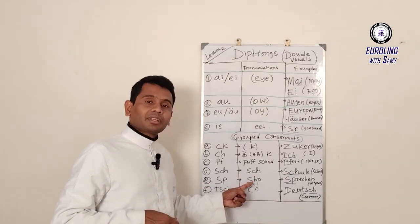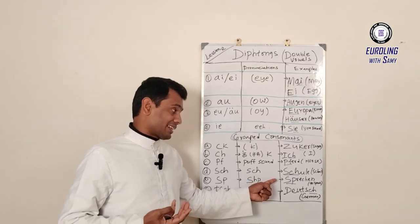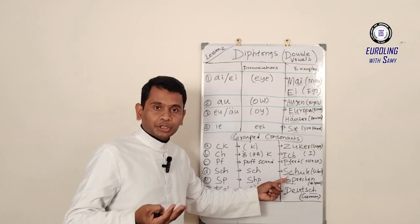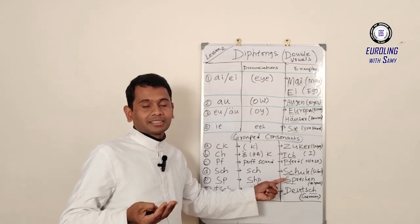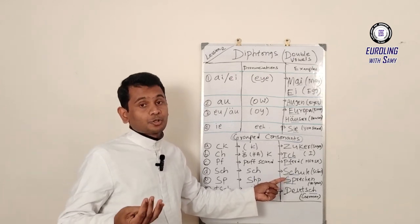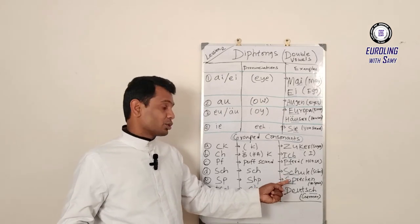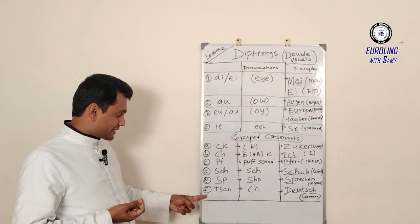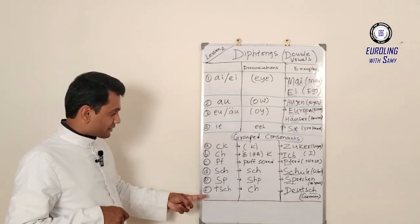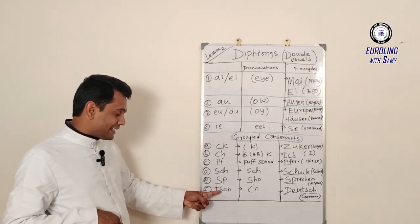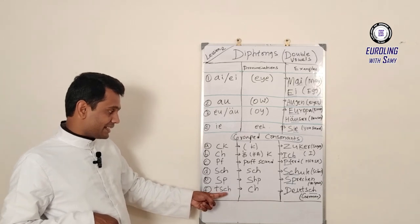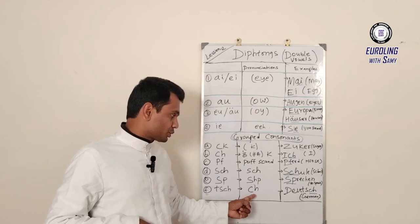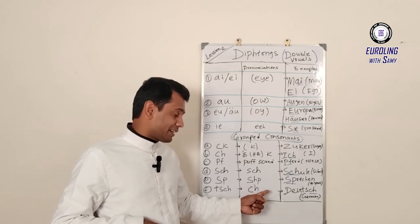There is another example for grouped consonants, that is S-P, for example SPRECHEN. You call it as SPRECHEN, and that means to speak. Let's give another example for grouped consonants, that is TSCH, pronounced as SH.